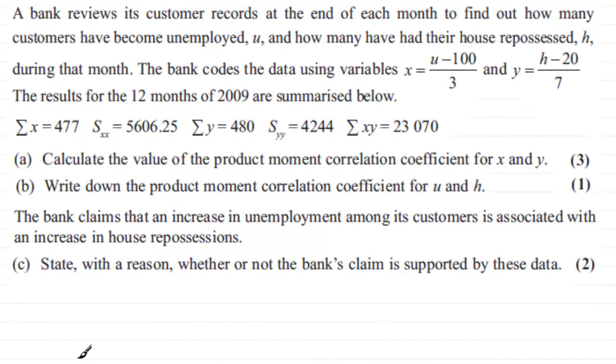Now for the last part of the question, it says that the bank claims that an increase in unemployment among its customers is associated with an increase in house repossessions, and we've got to state with a reason whether or not the bank's claim is supported by these data.